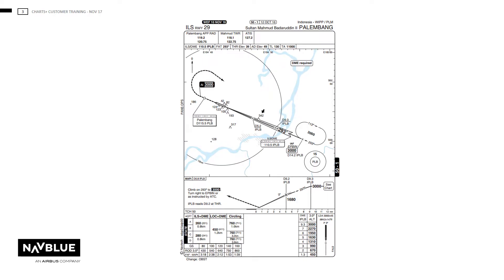Here is an example of an IAC chart, ILS runway 29. The IAC chart shall be arranged to show the actual procedure on one page. It will normally start from the initial approach fix to and including the missed approach. Normally only one procedure type shall be shown on each chart, but if the procedures are almost the same and there will not be too many exceptions, then they can be put together.